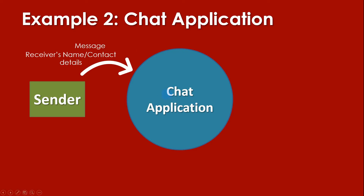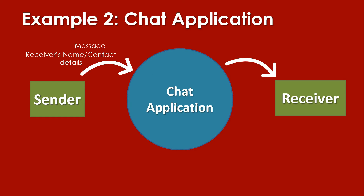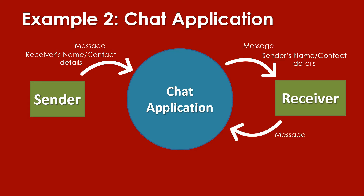After receiving all the data needed for the chat, the process will give something to the receiver. The receiver gets the message and also the sender's name or contact details. The receiver can also send a message back — input a message to the application — and the application can send that message to the sender. The message is transferred vice versa. If the receiver inputs a message to the application, he becomes the sender. This is an example of a context diagram for a chat application.